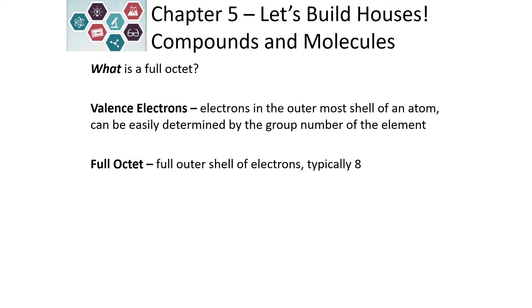All of our atoms want to have a full outer shell of electrons — typically this is eight electrons. So in order to get that full outer shell, an atom wants to either gain, lose, or share electrons in order to fill it.